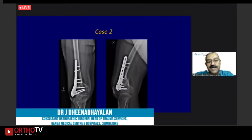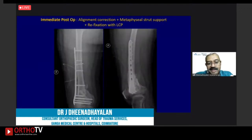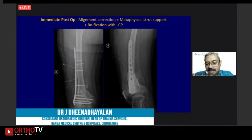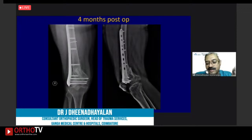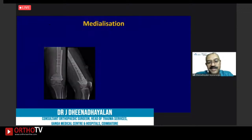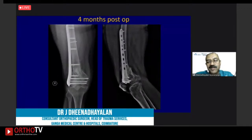Another case: failure to achieve medial contact results in medial void, which always results in failure. The same procedure — medial strut graft and centralization of the shaft with stabilization. When it has a gap between femur and plate, the shaft is medialized, alignment is centered, and with good stability it heals well.